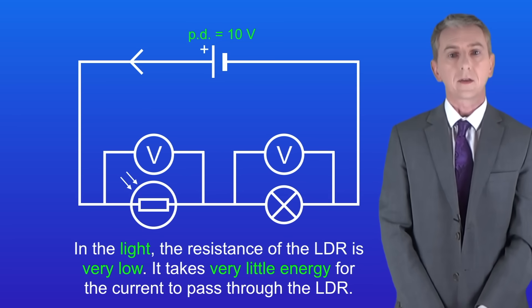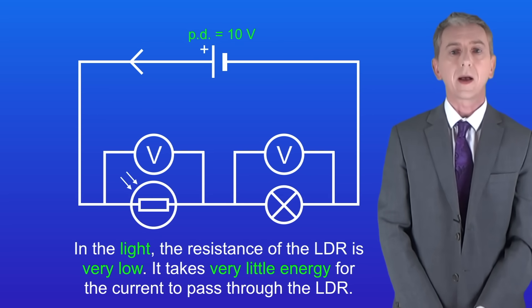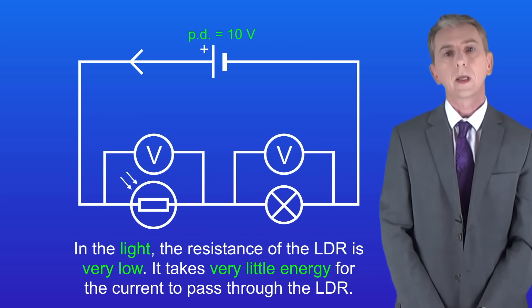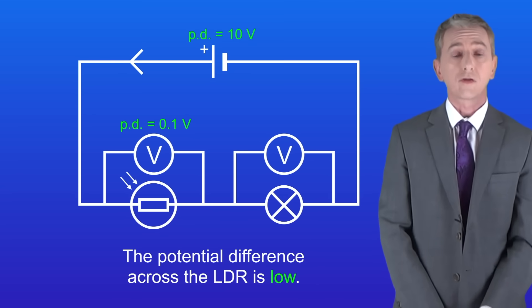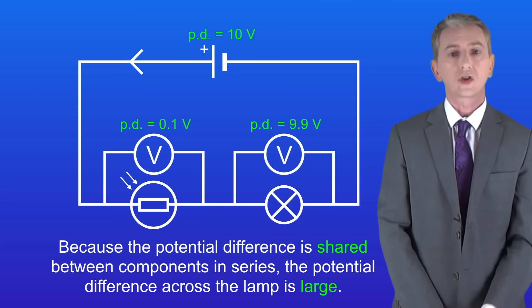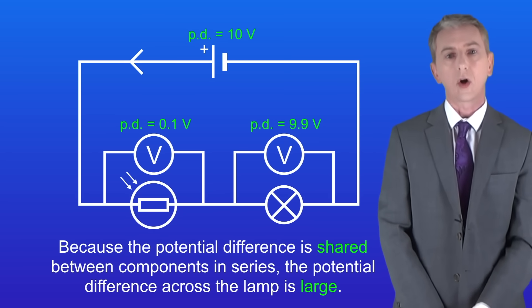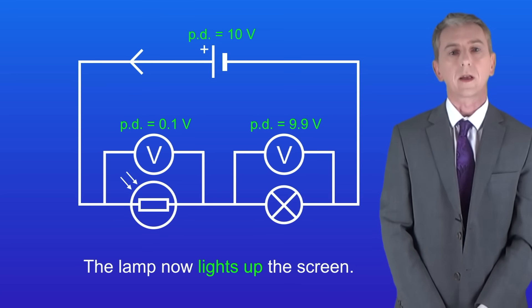Now in the light, in other words when the phone is not held to your ear, the resistance of the LDR is very low. That means that it takes very little energy for the current to pass through the LDR. Because of that the potential difference across the LDR is very low. Now remember that the potential difference is shared between components in series. So that means that the potential difference across the lamp is large. So the lamp now lights up the screen.